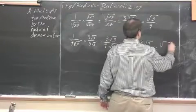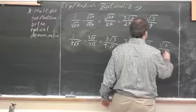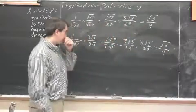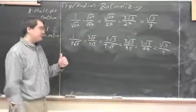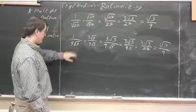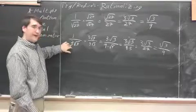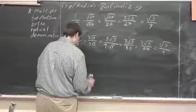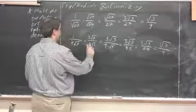which would finally take us to the same thing that we have up there. That wouldn't be wrong, but it's faster to just multiply by the radical part. Because I'm okay with the 3, that's fine, I don't have a problem with having the 3 down there, I just don't want the radical 3.